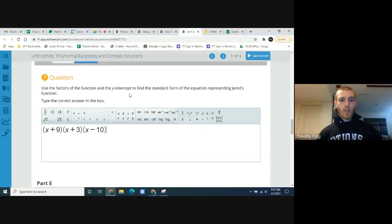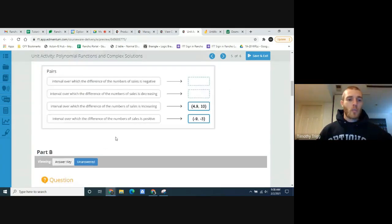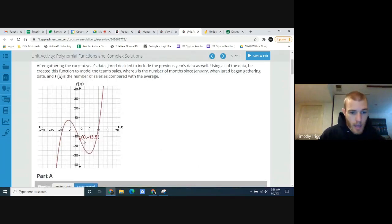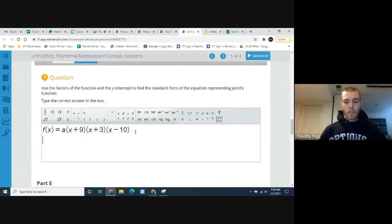Use the factors of function in the y-intercept standard form. Okay. Now, so our function, there's also going to be like an a in front. So this is like a multiplier. Now, we don't know what this a is right away, but we can figure it out. And the way we do that is by looking at the y-intercept. So the y-intercept, in our case, is negative 13.5.